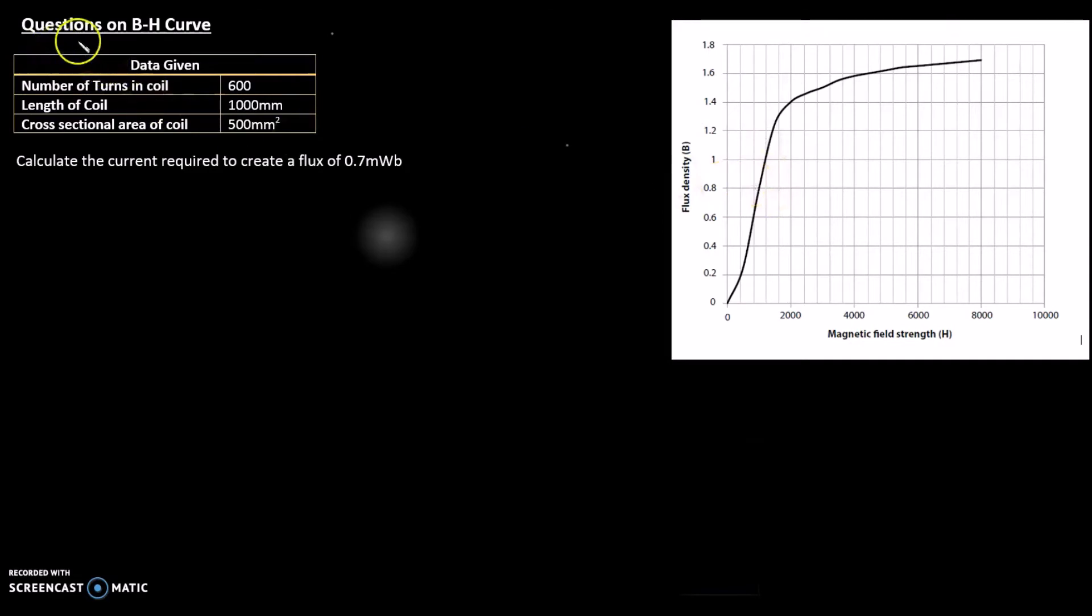This is a typical question on a BH curve. You have your data: number of turns in core 600, length of core 1000mm, cross-section area of core 500mm², and the question says calculate the current required to create a flux of 0.7 milliweber.